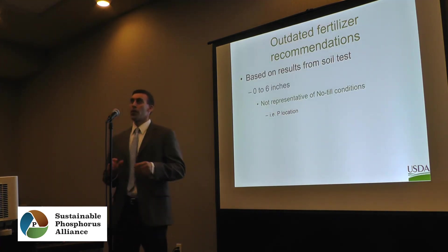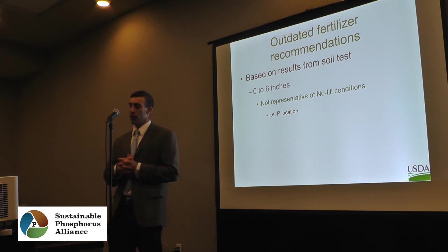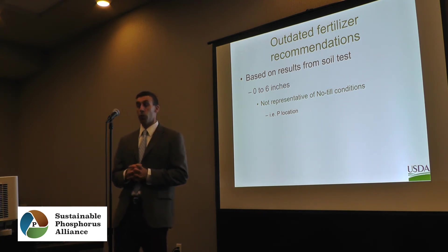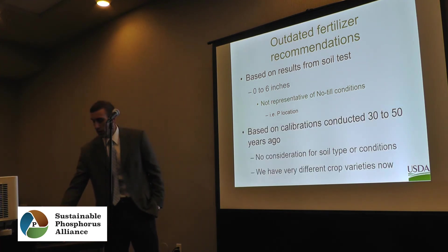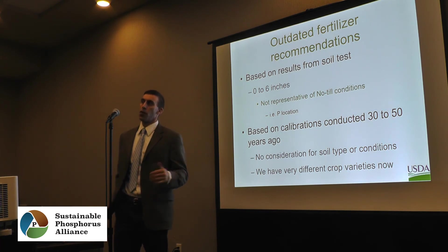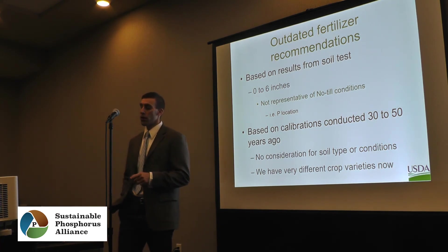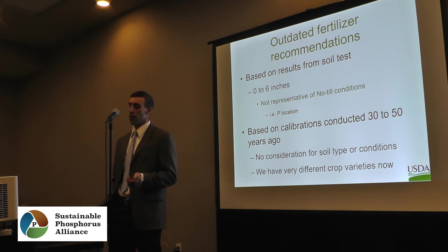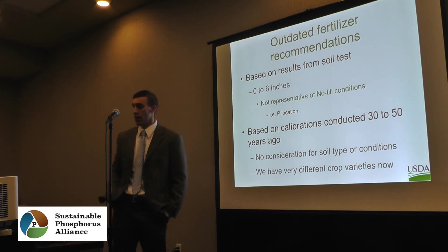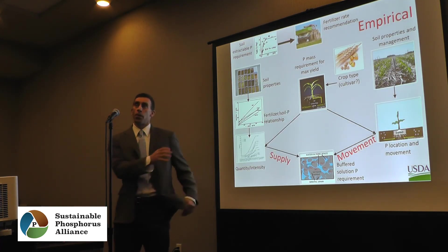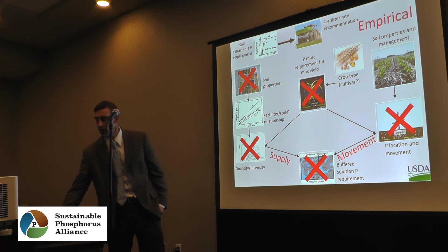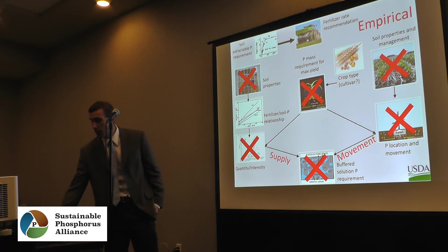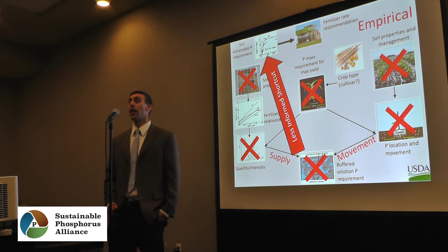Our current recommendations are empirical — not terrible, but outdated. They're based on soil samples taken from 0 to 6 inches, which is not representative of no-till conditions, and phosphorus location is very important. They're also based on empirical calibrations conducted 30 to 50 years ago with no consideration for different soil types or conditions. And our crop varieties are very different now. Applying this view to our current empirical method, it doesn't consider many of these factors — it takes a shortcut, but a less-informed one.